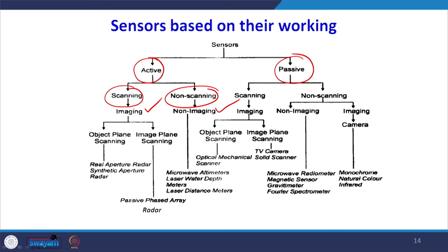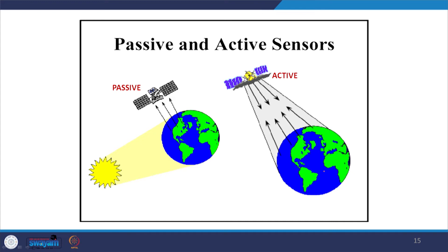Under the imaging active category we have synthetic aperture radar data. Under the non-imaging active category we have microwave altimeters and laser distance meters. For passive sensors, under scanning categories we have TV cameras as an example; under non-imaging we have microwave radiometers or gravity meters. These are some of the sensors frequently used in remote sensing.